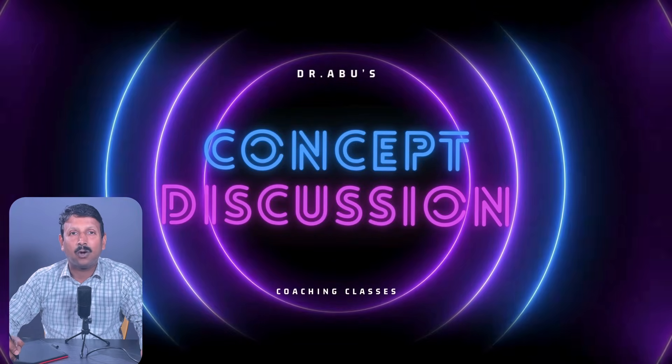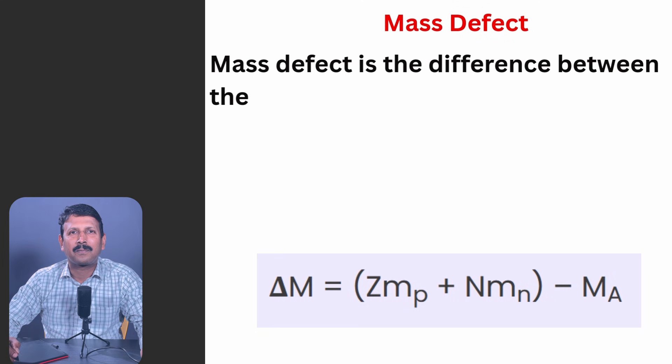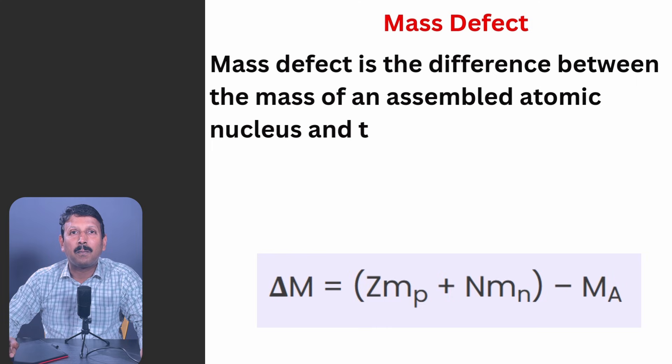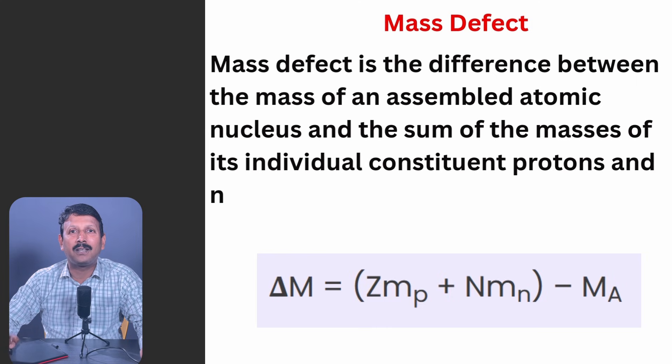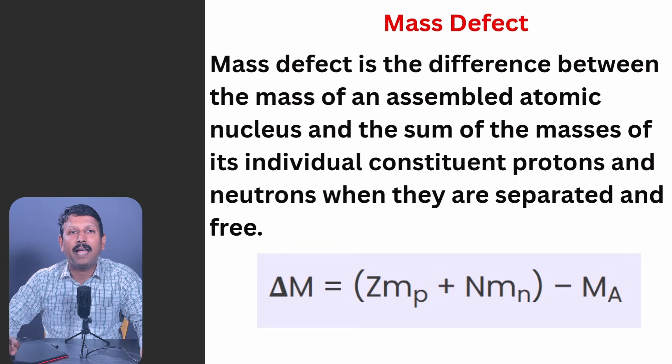We will see the concept required for this one first. First we want to know what is mass defect. Mass defect is the difference between the mass of an assembled atomic nucleus and the sum of the masses of its individual constituent protons and neutrons when they are separated and free. And how to calculate mass defect - there is an equation here: ΔM = (Zmp + Nmn) - MA, mass of the nucleus formed.